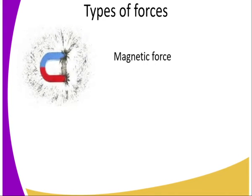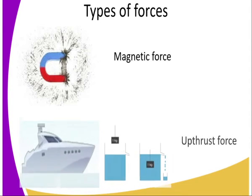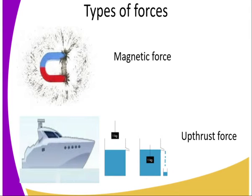We also have magnetic force. Magnetic force basically applies to materials which are ferromagnetic — those that have that magnetic property. This property has been widely employed in the making of a compass, which gives us direction in line with the magnetic field of the earth.